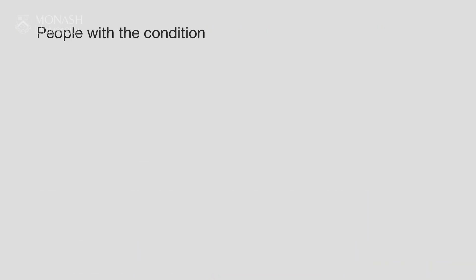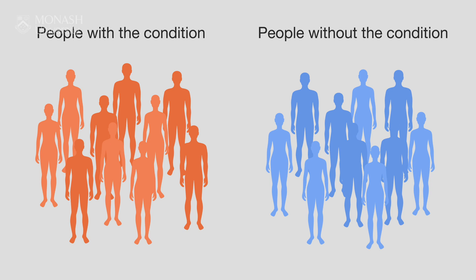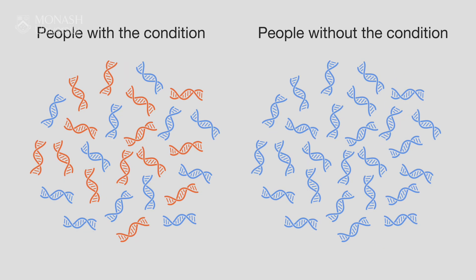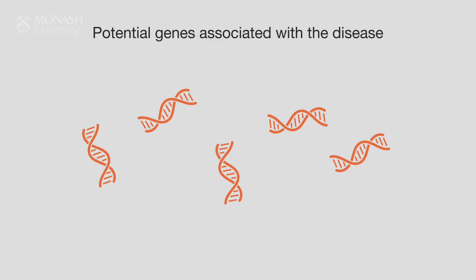Genome-wide association studies compare two groups of populations: one with a condition — chronic disease, type 2 diabetes, obesity, cardiovascular condition — and a group of healthy population, and investigate what gene variants are associated with the disease group. We now have a very large number of loci that are associated with those chronic conditions. It's also important to consider that genome-wide association studies are by definition association studies — they do not identify the causal link between the gene variant and the disease.